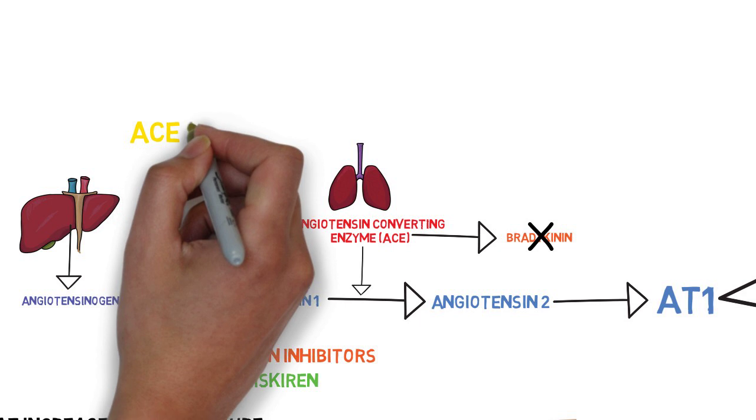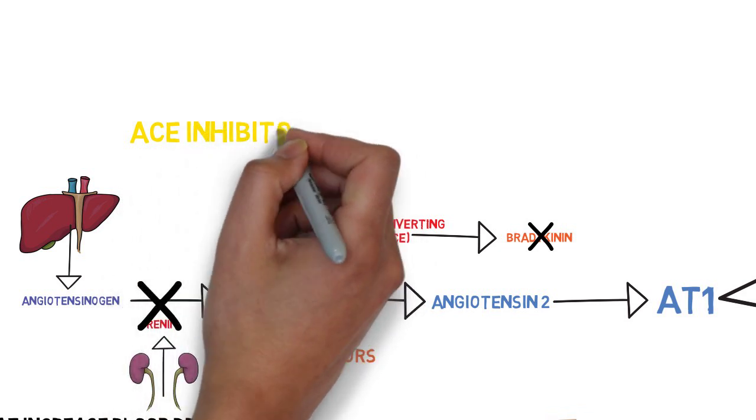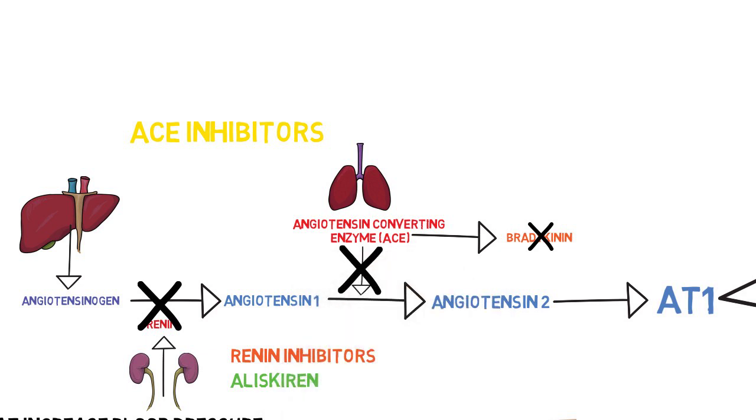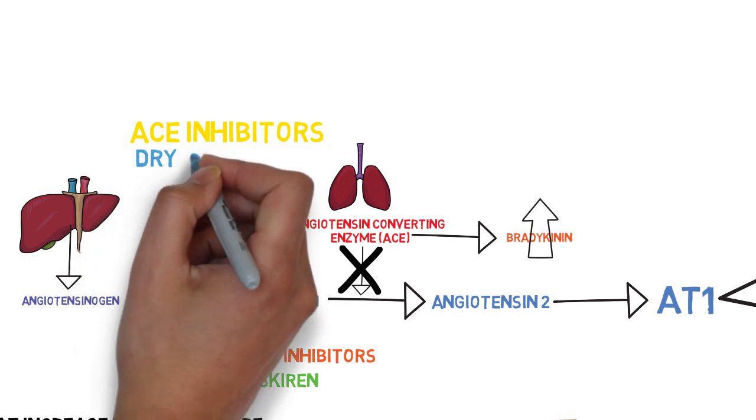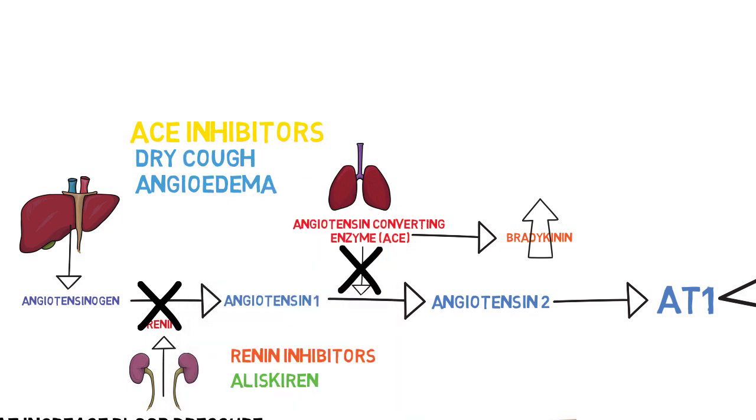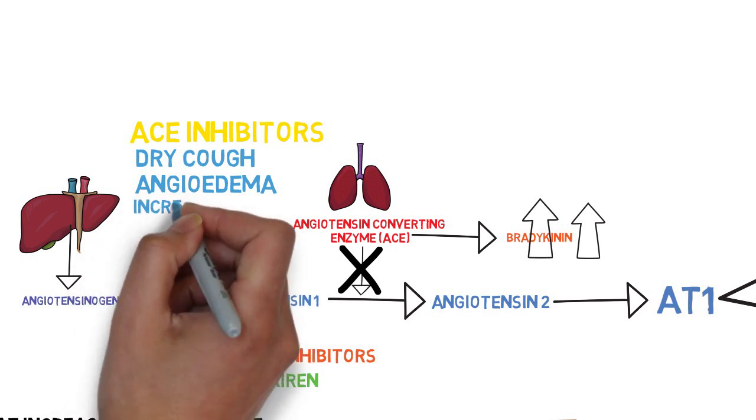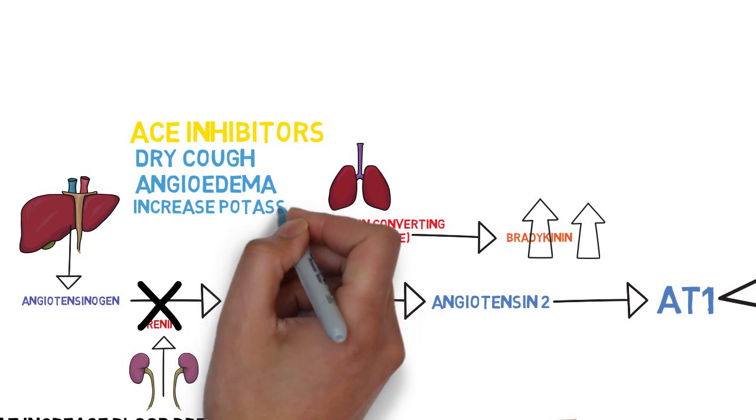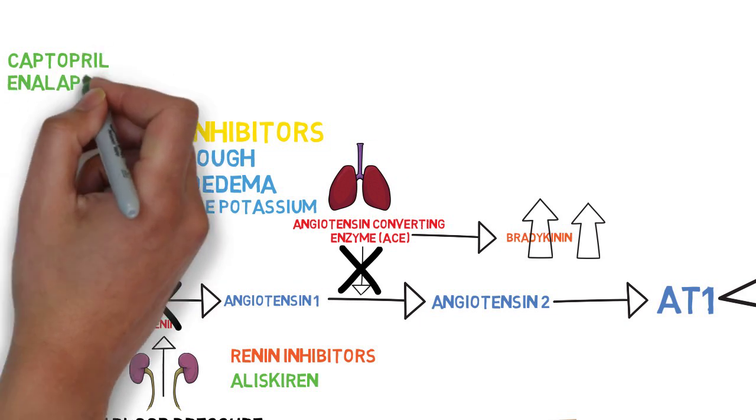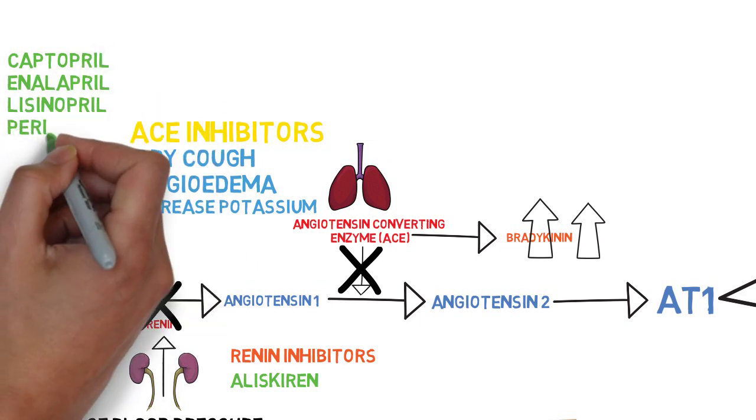The second class of drugs are called ACE inhibitors. Now these are the most common class of drugs used to treat high blood pressure. They block angiotensin converting enzyme, thus stopping the formation of angiotensin 2. By blocking angiotensin converting enzyme, ACE inhibitors also increase levels of bradykinin causing blood vessels to dilate. ACE inhibitors are associated with side effects such as dry cough and angioedema, which is swelling of the lips or tongue. It is thought that increases in bradykinin is what leads to these side effects. They can also cause hyperkalemia or high levels of potassium because ACE inhibitors block sodium retention. Examples of ACE inhibitors include captopril, enalapril, lisinopril, perindopril, and ramipril.